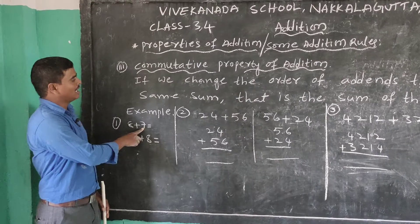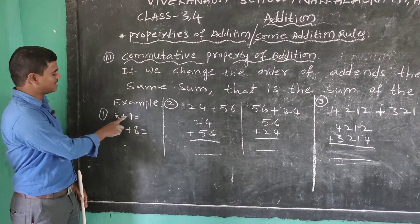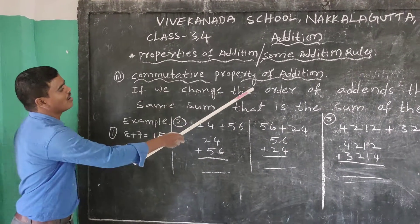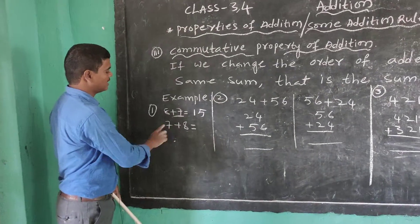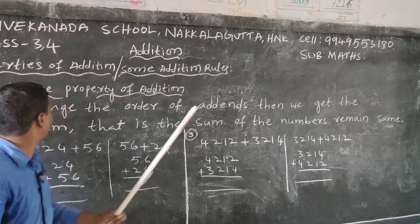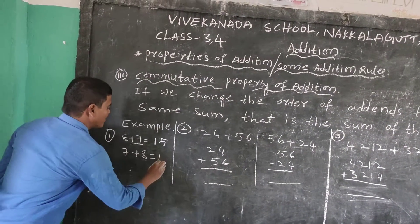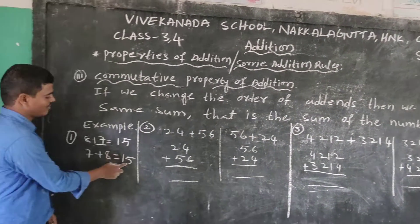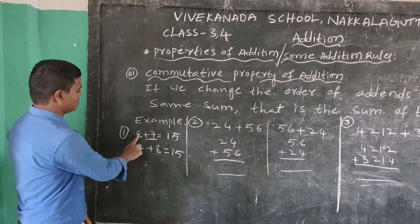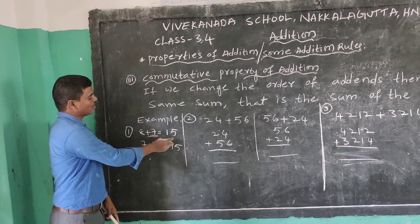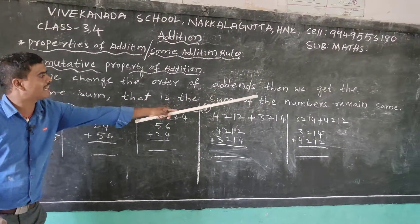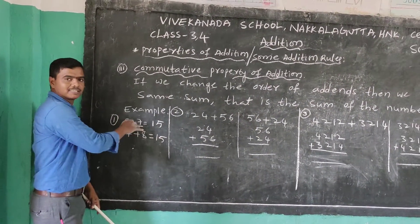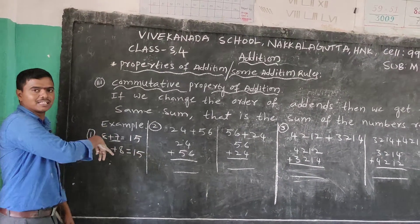Example: 8 plus 7. First, 8 plus 7 is 15. If we change the order of the addends — that is, 7 plus 8 — we still get 15. That is, the sum of the numbers remains the same. Both sums are equal: 8 plus 7 equals 15, and 7 plus 8 equals 15.